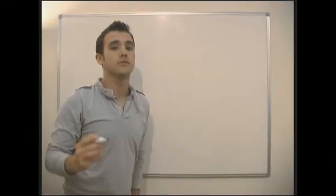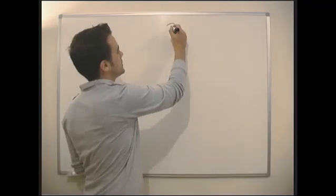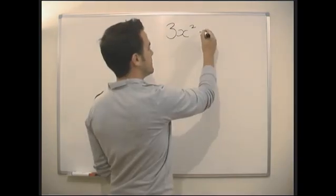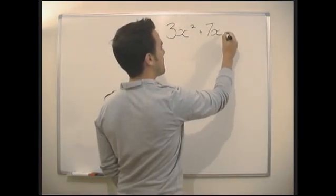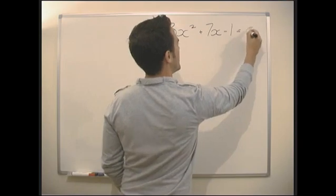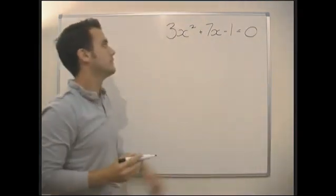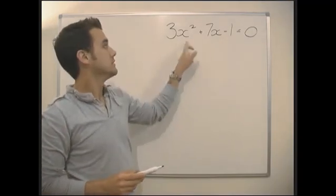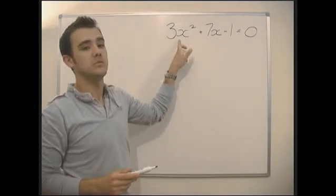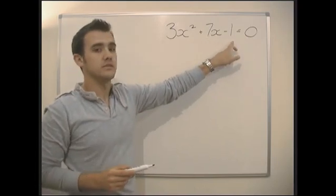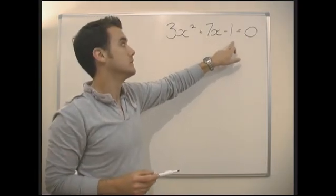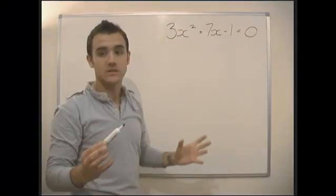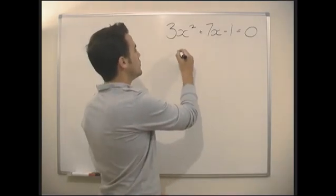We're going to look at an equation now that can't actually be factorised. We wouldn't normally know whether or not something can be factorised — we'd have to check it ourselves. We can see straight away that it can't be factorised. I don't know how we can get something to make minus 1, especially when we need a difference of 7. The only things that make minus 1 are minus 1 and 1, so we obviously cannot get a difference of 7. This is not going to factorise, so we have to use the quadratic equation.